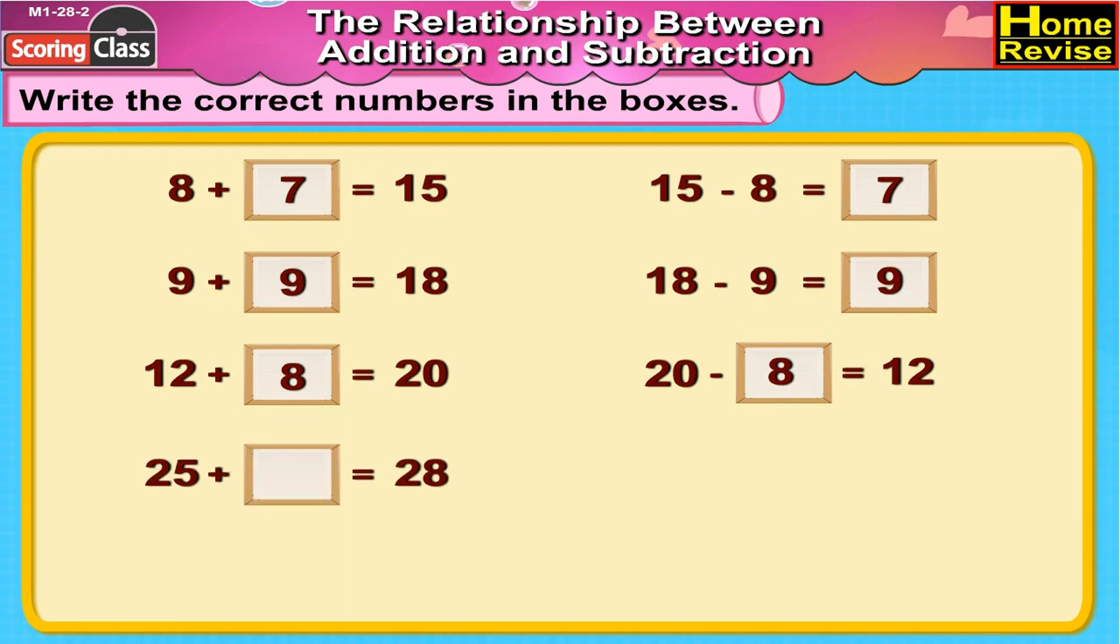Next is 25 plus dash is equal to 28. That's correct. 3 it is. 25 plus 3 is equal to 28. Now 28 minus how much would be 25? Yes, it has to be 3. So 28 minus 3 is equal to 25.